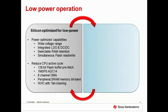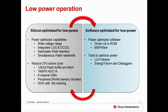The flash buffer and DMA helps you to minimize the CPU cycles. At the same time as having low power silicon, we wanted to provide low power tools and software. The driver library in ROM also consumes less power than if driver library was running out of flash. Tools like ULP Advisor and Energy Trace Plus allow you to optimize your code so that you're not consuming extra power where it's unneeded.